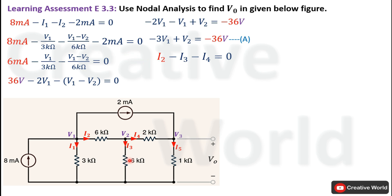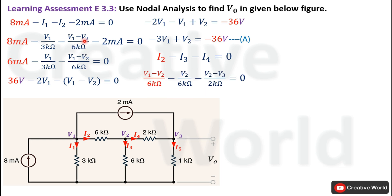Current I3 equals the voltage across the 6 kΩ resistance divided by 6 kΩ, which is V2 divided by 6 kΩ. Current I4 equals the voltage across the 2 kΩ resistance divided by 2 kΩ. Since the current is leaving this node and entering the next, this node is at higher potential, so the voltage across the 2 kΩ resistance is V2 minus V3. Therefore I4 equals V2 minus V3 divided by 2 kΩ.